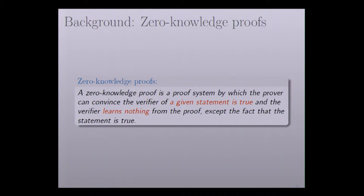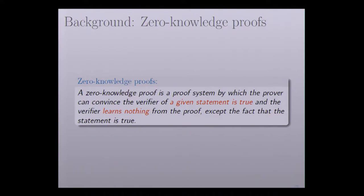So what is a Zero-Knowledge Proof? Informally, a Zero-Knowledge Proof is a proof system where one party, say the prover, can convince another party, say the verifier, that the given statement is true. And besides that, the verifier should learn nothing from the proof.